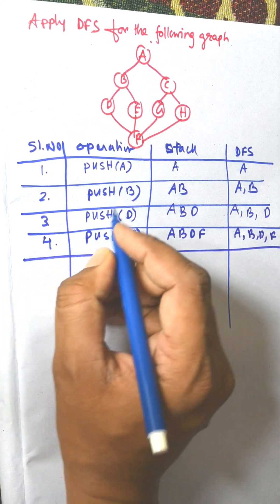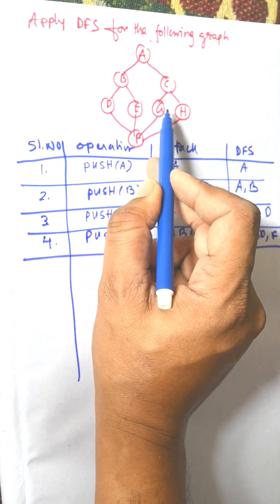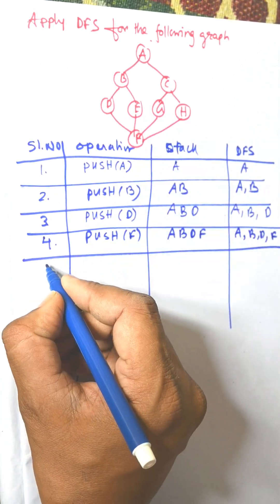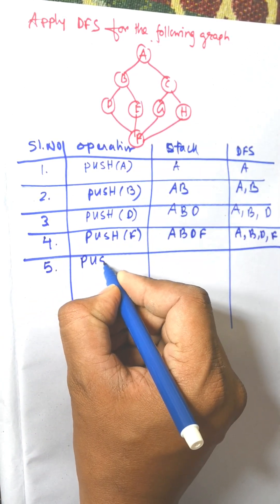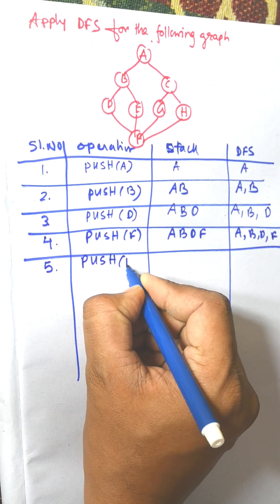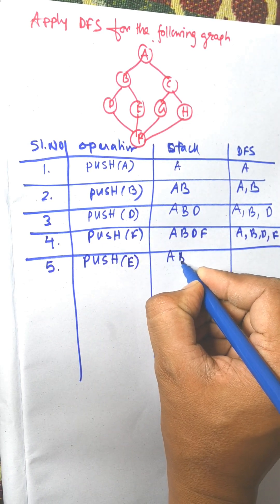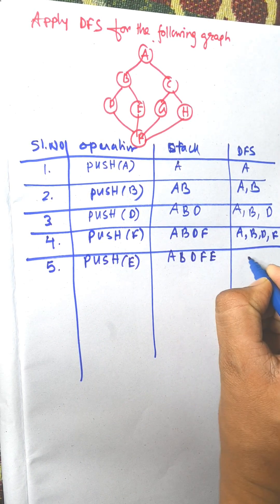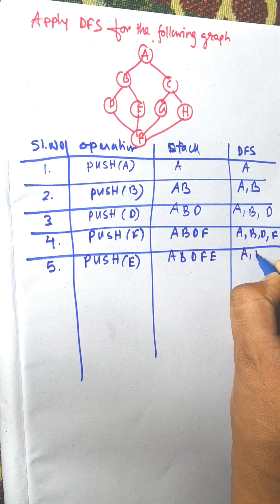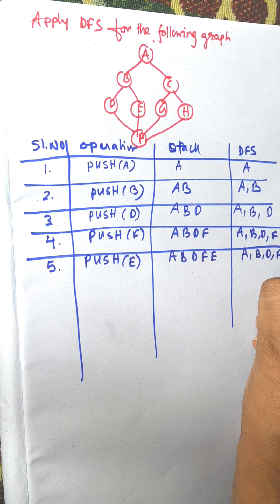Serial number 5. From F we can visit E, G, or H. According to alphabetical order we push E. The stack is now A, B, D, F, E and the visited list is A, B, D, F, E.